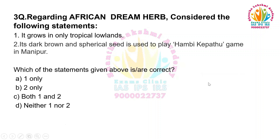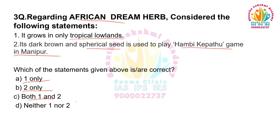Moving to the next question. Regarding the African Dream Heart, consider the following statements. It grows only in tropical lowlands. Its dark brown and spherical seed is used to play the Ambi Ke Patu game in Manipur. Which of the statements given above are correct? One only. Two only. Both one and two. Neither one nor two.